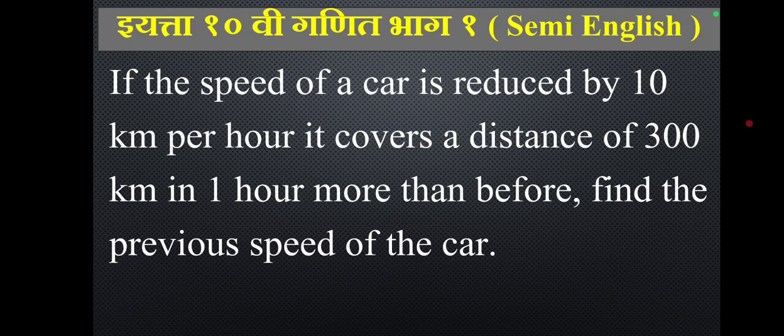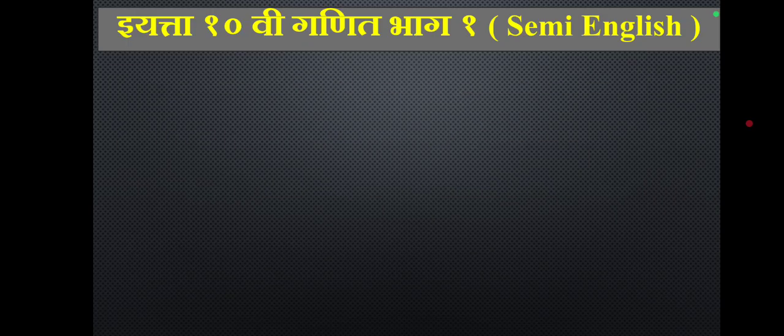If the speed of a car is reduced by 10 km per hour, it covers a distance of 300 km in one hour more than before. Find the previous speed of the car.